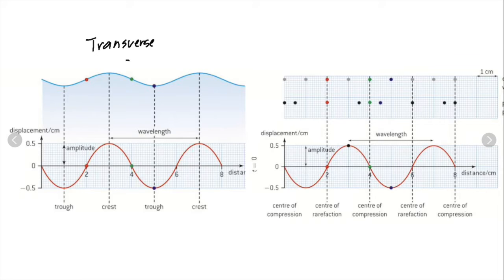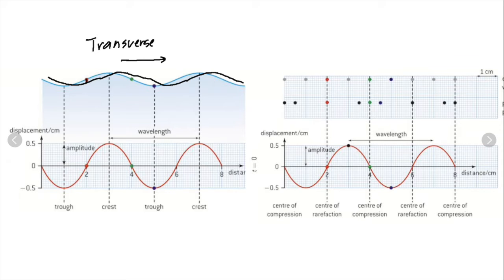We don't know which way the wave is moving, but we'll say it's moving to the right. As the wave moves a little bit to the right, the red one is going to move down, the green one is going to move up, and the blue one is going to move up. So the particles are moving up and down while the wave is moving to the right. Drawing that wave, you can see it moving a little bit to the right — that's usually the easiest way to figure out what direction the particles are moving.